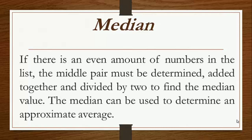If there is an even amount of numbers in the list, the middle pair must be determined, added together and divided by two to find the median value. The median can be used to determine an approximate average.